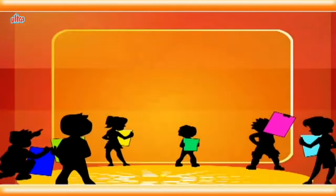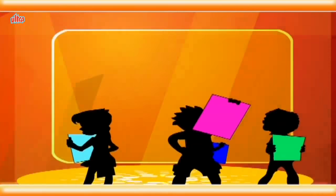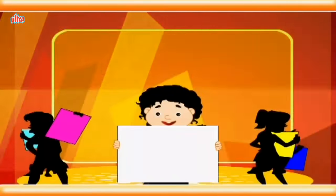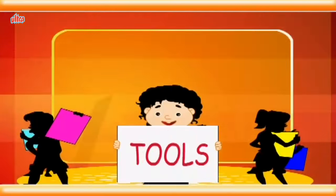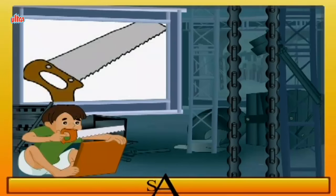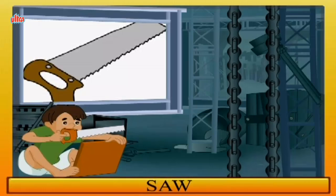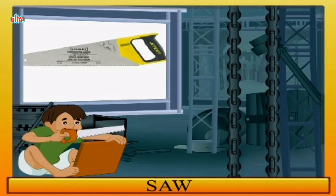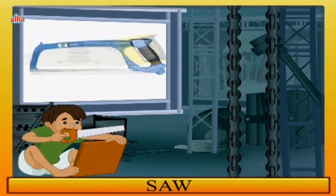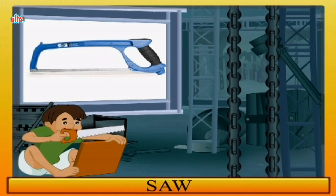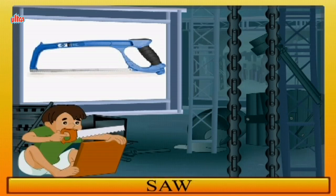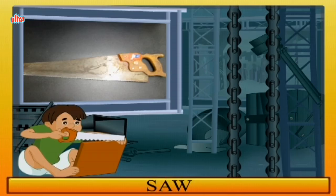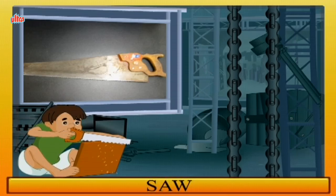In this chapter, we will learn about the various tools. Saw. S for saw. A saw is a tool that uses a hard leg with an abrasive edge to cut through softer materials.